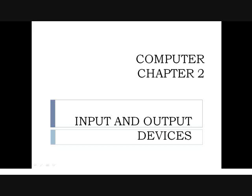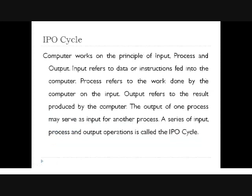This is for the computer subject, Chapter 2: Input and Output Devices. The first topic is the IPO cycle — Input, Process, Output cycle. The computer works on the principle of input, process, and output. Input refers to the data or instructions fed into the computer. Data and instructions are provided to the computer through input devices such as keyboard, mouse, scanner, MICR, OMR, microphone, light pen, webcam, and others.